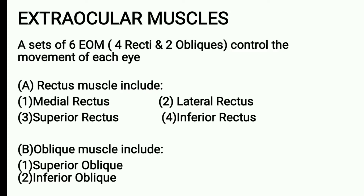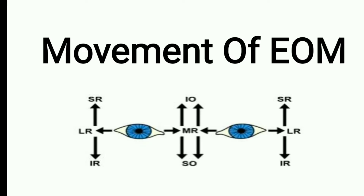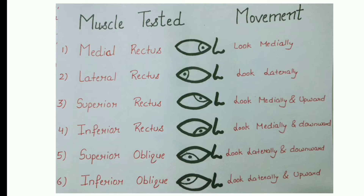Now the movement of extraocular muscles: the medial rectus helps us look toward the medial side, meaning toward the nose. The lateral rectus helps us look toward the lateral side, meaning away from the nose. The superior rectus helps us look upward and toward the medial side. The inferior rectus helps us look downward and toward the medial side.